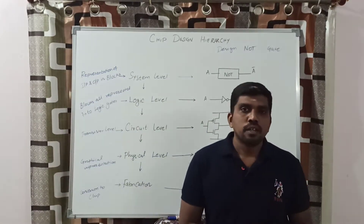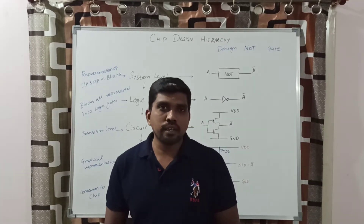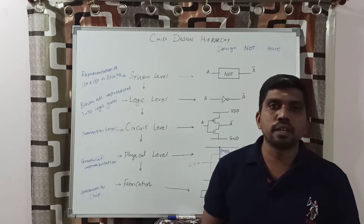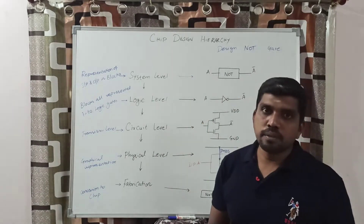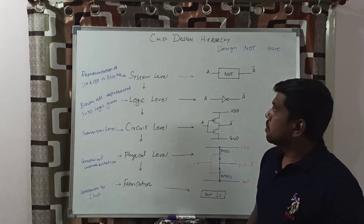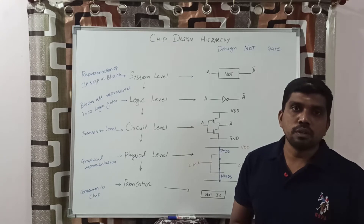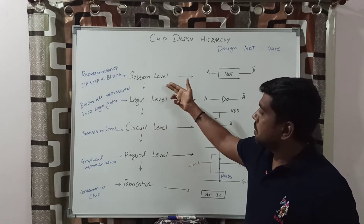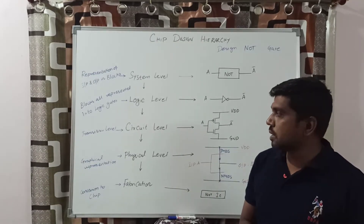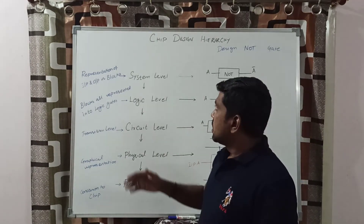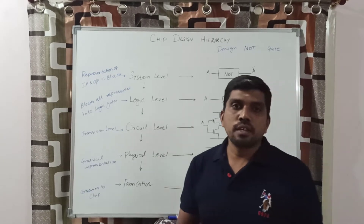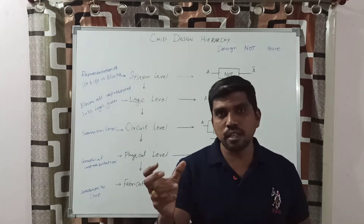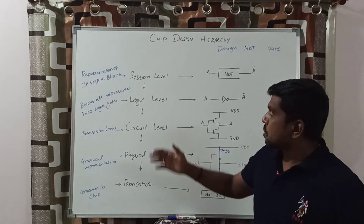Hi guys, welcome back to our channel. Now we are going to discuss chip design hierarchy. Hierarchy means the steps followed to fabricate the integrated circuit. In chip design hierarchy, we follow different levels: the first level is system level, next is logic level, then circuit level, physical level, and finally fabrication. System is a collection of different components accommodated in a single package.